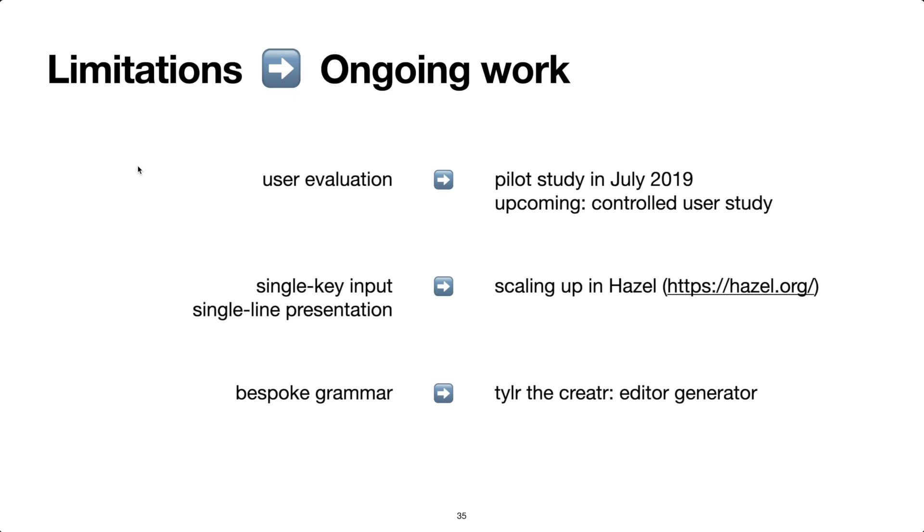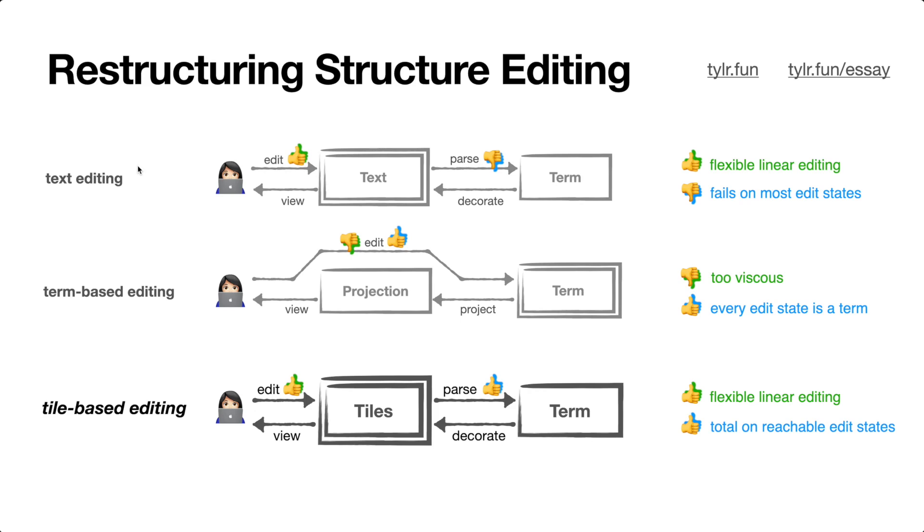And finally, Tyler has a tiny bespoke grammar, but we think the idea is immediately generalized to the class of visibly pushed down grammars. So it'd be nice if we could automatically generate tile-based editors from a given visibly pushed down grammar. And further down the line, we're interested in extending these ideas to support more general context-free grammars. So that was my talk on restructuring structure editing. You can play with Tyler today at Tyler.fun. And you can read our accompanying web essay on tile-based editing at Tyler.fun slash essay, which provides some extra details I didn't have time to cover here. I will say that it is currently a work in progress and uses some outdated terminology regarding the backpacks, but otherwise the ideas remain the same. Thanks for listening.